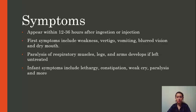Eventually, paralysis is able to develop in the respiratory muscles, legs, and arms if left untreated. Infant symptoms are very similar to symptoms mostly seen in adults, and they include lethargy, constipation, weak cry, loss of muscle tone, and eventually paralysis.